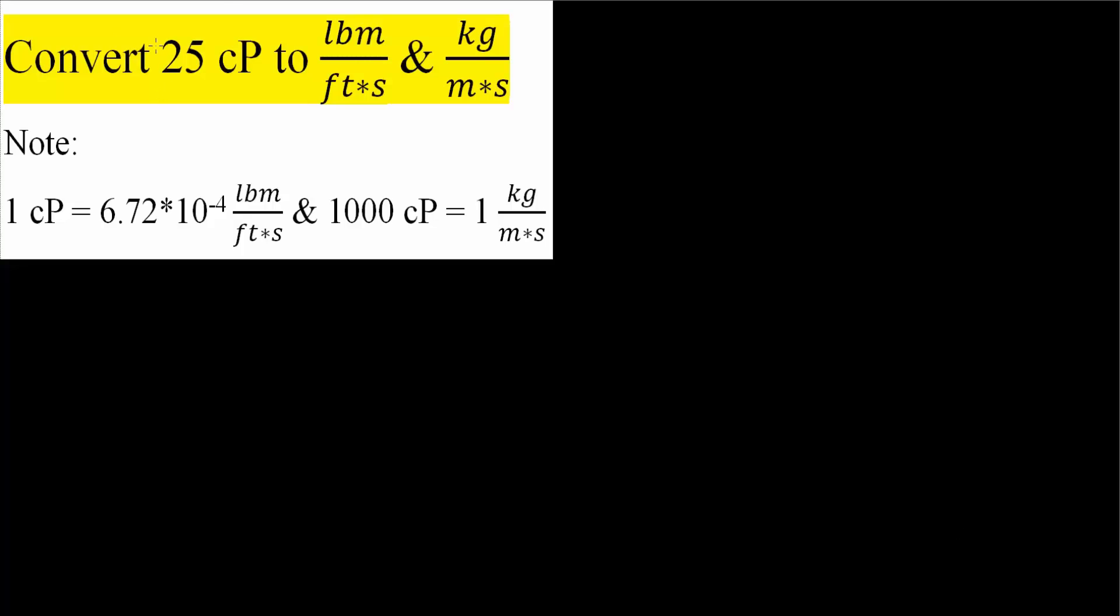In this video, we will convert 25 centipose to pound mass divided by feet times seconds and kilograms divided by meters times seconds. These are our conversion factors that we will be using. So let's get started.